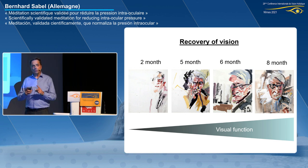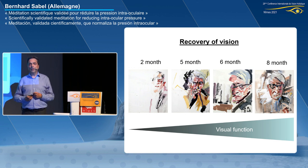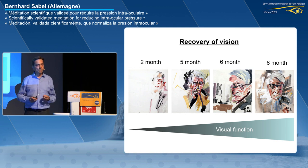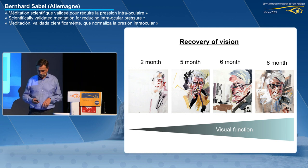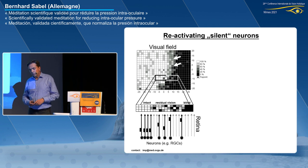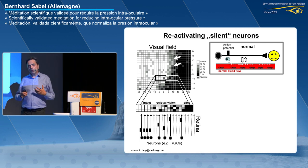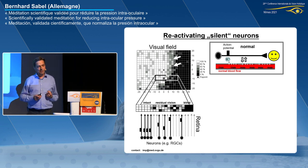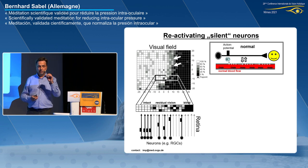When we look at vision, we cannot focus on what's not there. We should study in detail what is still there. Where are the cells that are inactive? How can we help them to improve? And why are they inactive in the first place? These silent neurons can be described by biological and physiological means. A neuron that sends visual signals from the eye through the optic nerve to the brain does so with electric impulses — many electric impulses called action potentials.